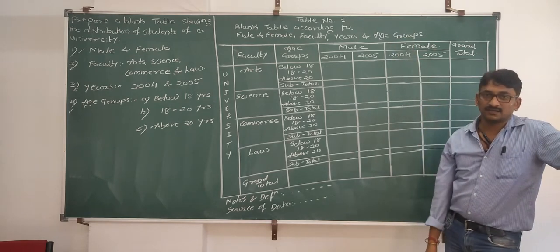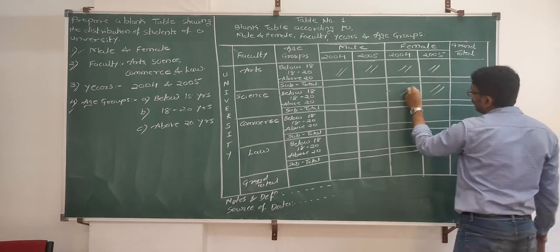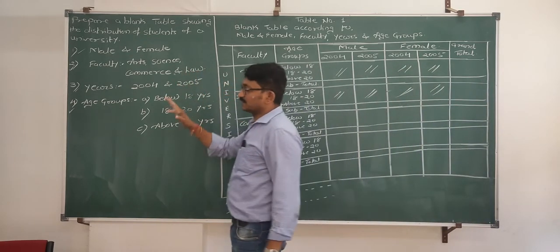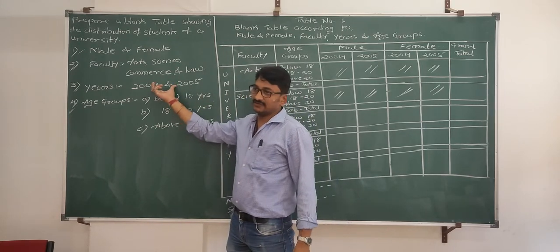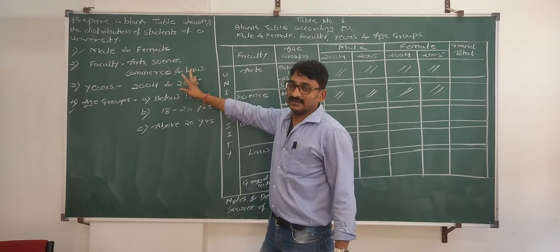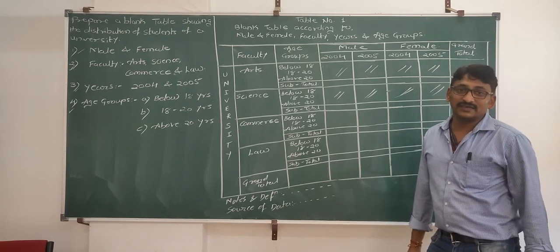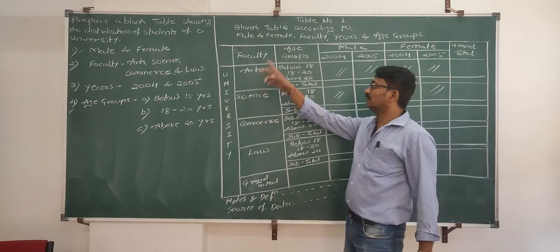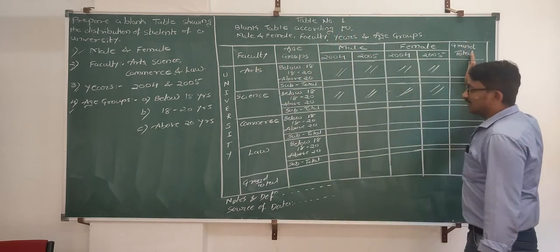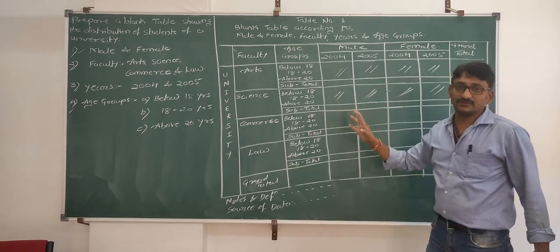This is called a blank table because the body of the table is completely blank. Comparing this problem to the previous one, there are two changes: years are given in this problem which were not in the previous problem, and one extra faculty — law — is added. This is the only change. Tabulation is called classifying data in a definite order. If such a problem comes, faculty and age group — don't change the sequence. Faculty stays as the second column, age group as the third column, and the last column is always grand total.